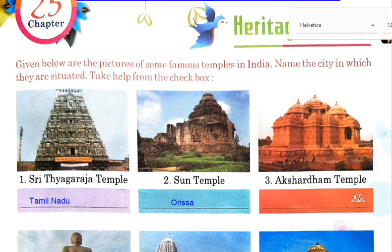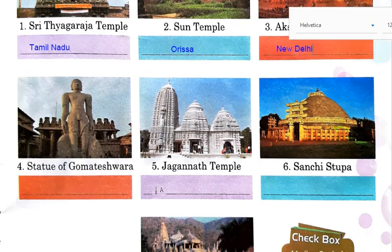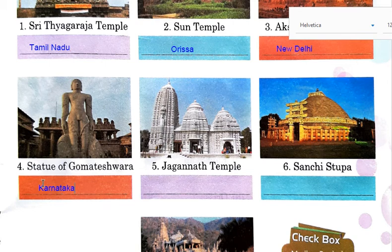The next one is Akshardham Temple. Akshardham Temple is in New Delhi. The next one is the Statue of Gomteshwar. Where is the statue of Gomteshwar situated? It is in Karnataka.